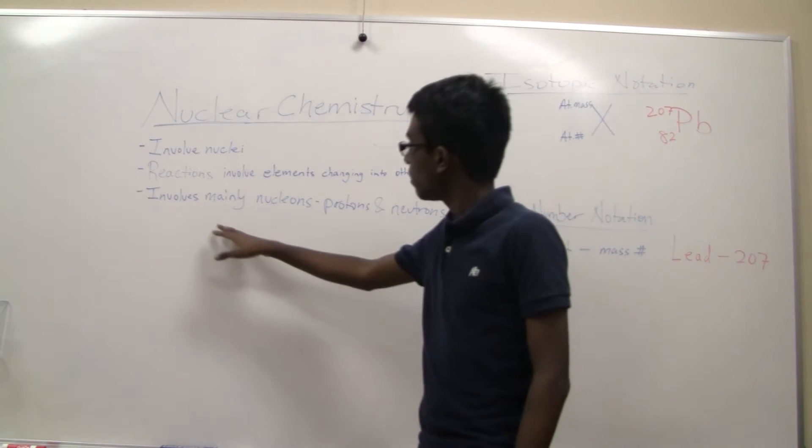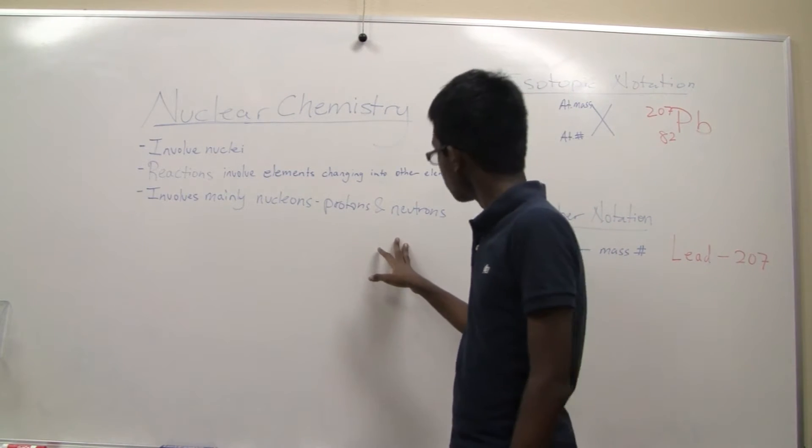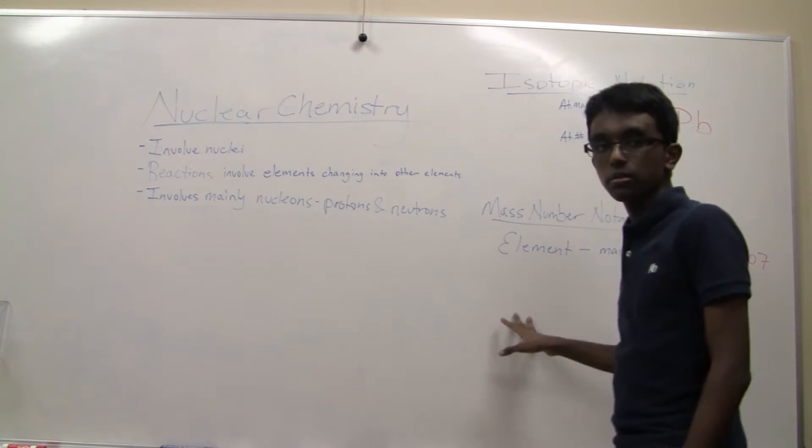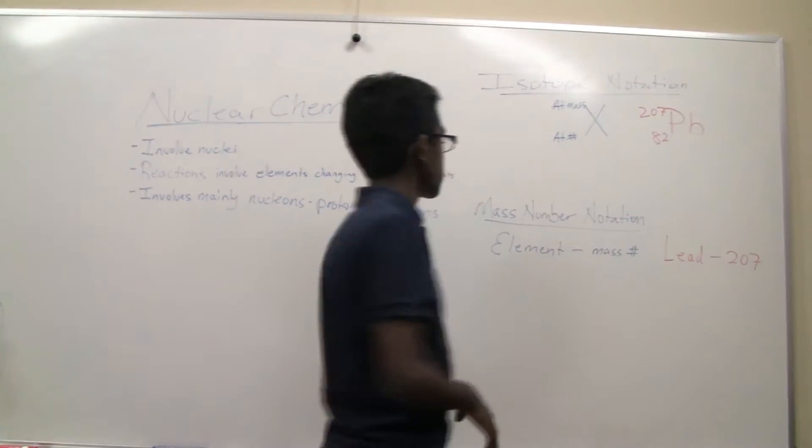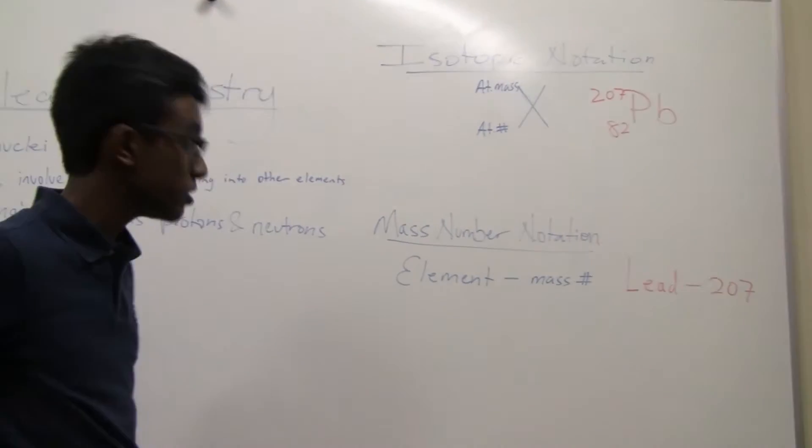Nuclear chemistry mainly involves nucleons, or protons and neutrons. So before I start this series of videos, I just want to talk about the two notations I'll be using when I'm talking about isotopes.